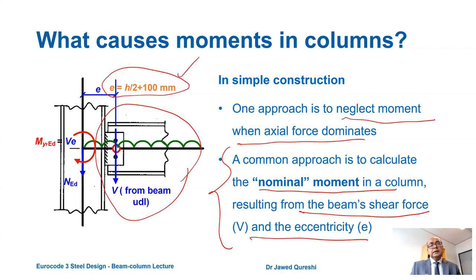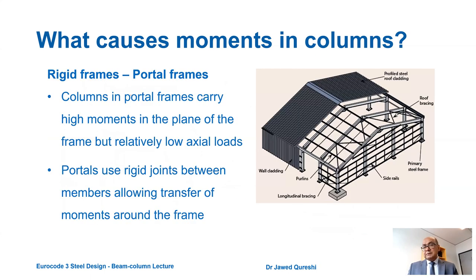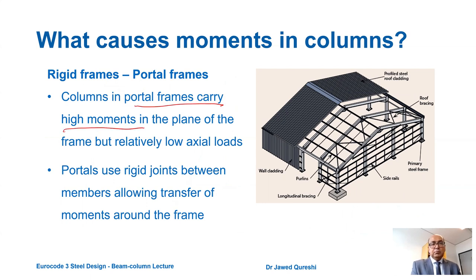This is the formula. If the beam is attached to the minor axis, then this will be TW over 2 rather than H over 2. Moments can also develop in portal frames where joints are rigid; these portal frames carry heavy moments in the plane of the frame but very low axial forces.